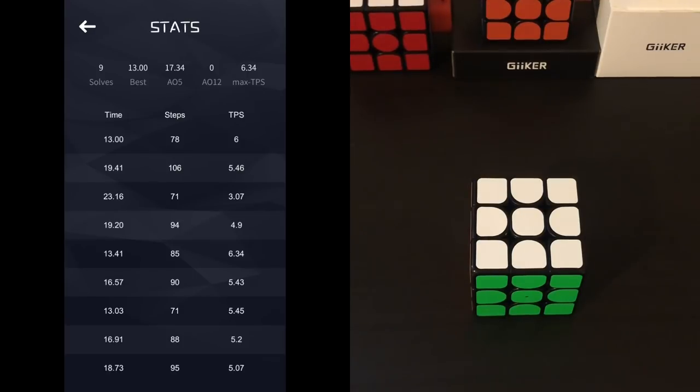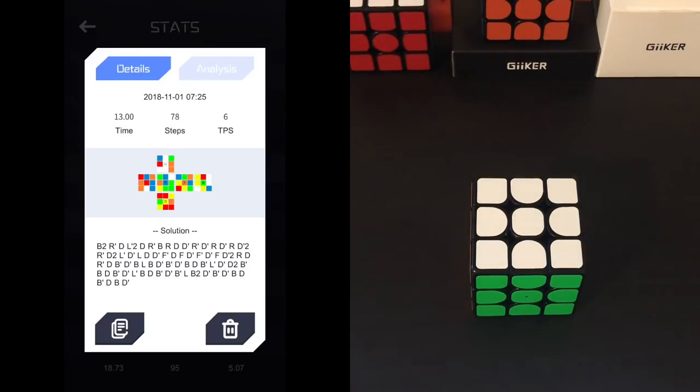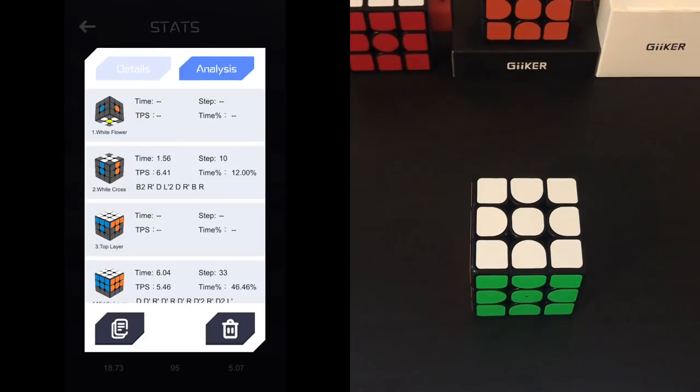So here you can see the scramble, the solution, the time, steps, and TPS. One of the coolest new features you can get to by clicking analysis on the top right. So this shows you your splits throughout the entire solve. Here you can see what moves were made, your TPS, time, and percentage of the solve were spent on that exact step. So for someone who does CFOP or cross, F2L, OLL, PLL, you'll notice a few things are skipped.